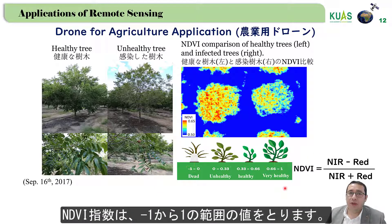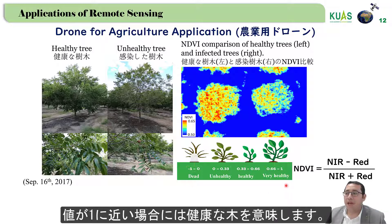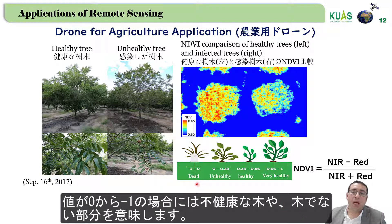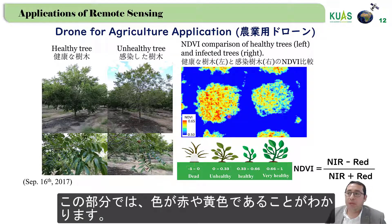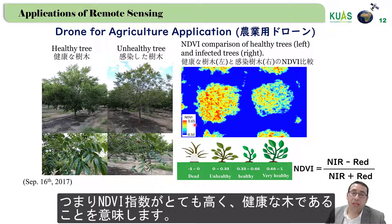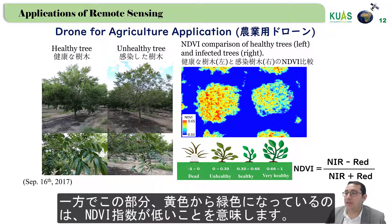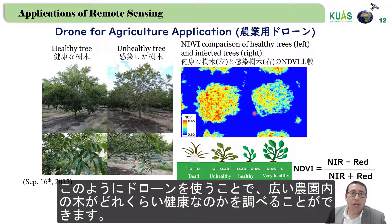The NDVI index value ranges from minus 1 to 1. If the value is close to 1, it means the tree is healthy. If it's close to 0 or minus 1, it means an unhealthy tree or no vegetation at all. In the results, red and yellow color indicates high NDVI, meaning healthy trees, while yellow to green color indicates low NDVI, meaning unhealthy trees. By using the drone, we can check how healthy the trees are across a large orchard.